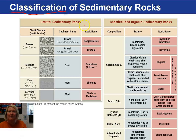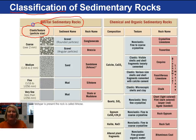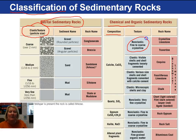This table for the classification of sedimentary rocks says it all. We have our detrital rocks here — it shows you the different size particles, the sediment name, and the rock name. Notice that all detrital rocks have the clastic texture.